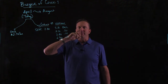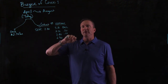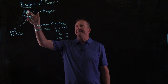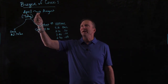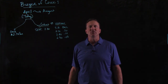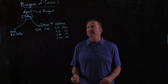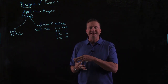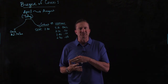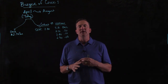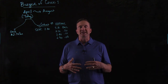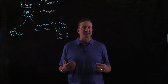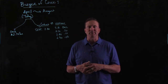Again, we are a buyer of corn, and in my example, write this down: today is April, and we have risk all the way to August. So April, May, June, July, and then in August, about five months away, we will actually need to go ahead and purchase corn for, let's just say, our feed mill operation.